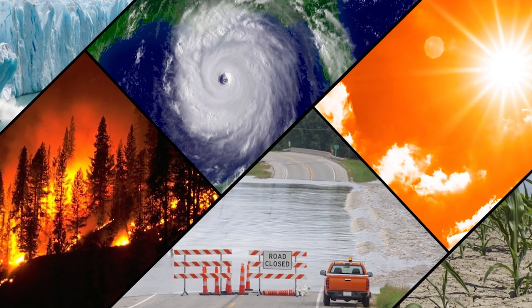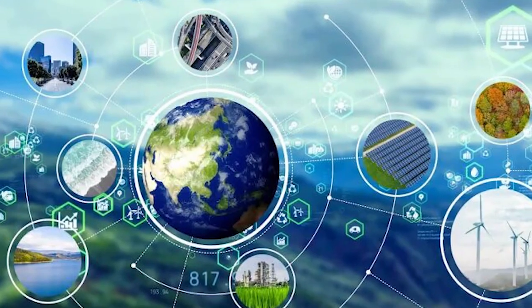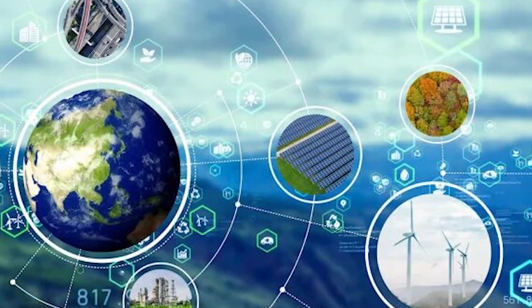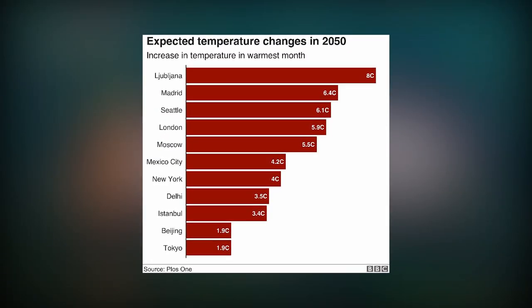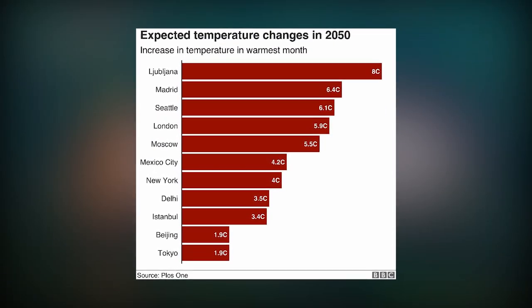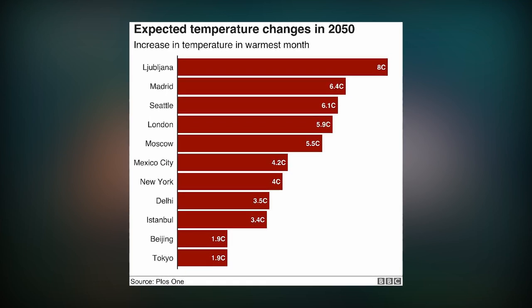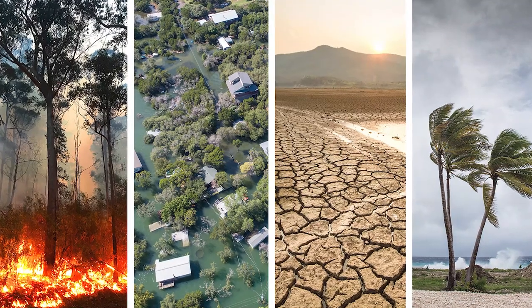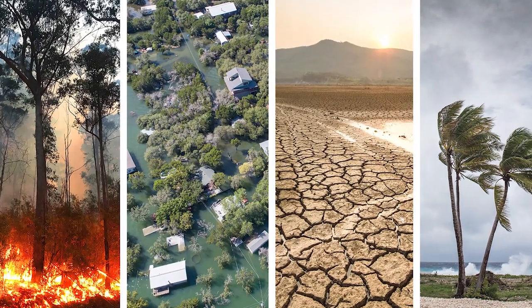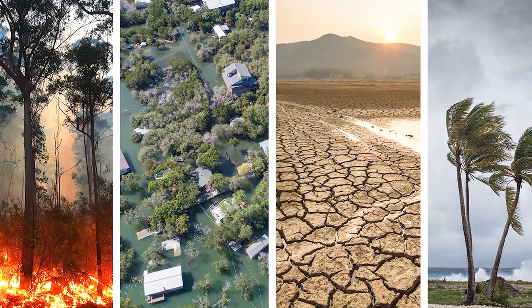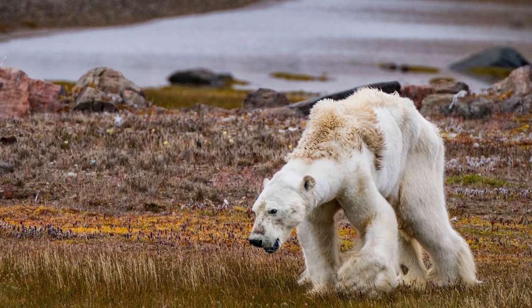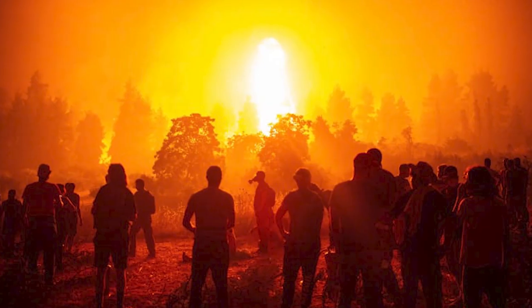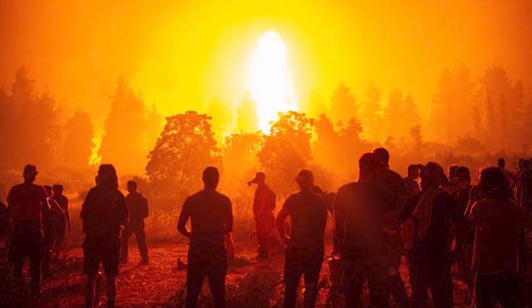Problem 1: Climate Change. Climate change is one of the biggest concerns for our planet's future. According to the United Nations, the average global temperature is expected to rise by 2 to 3 degrees Celsius by 2050, leading to more frequent and intense heat waves, droughts, and natural disasters. This will result in the loss of habitats and food sources for many species, and displacement of millions of people.